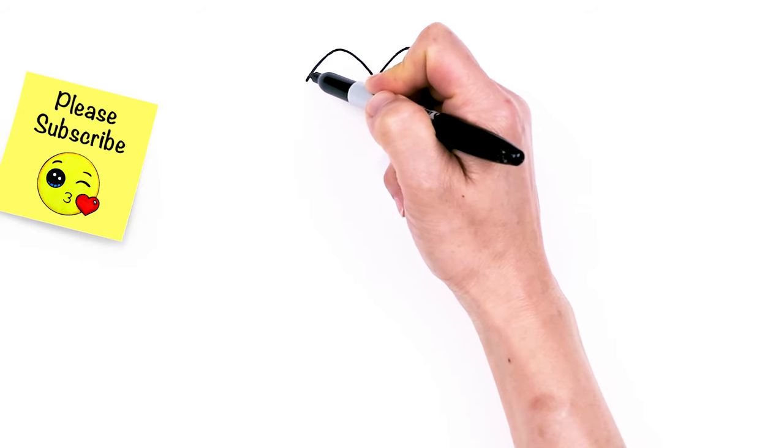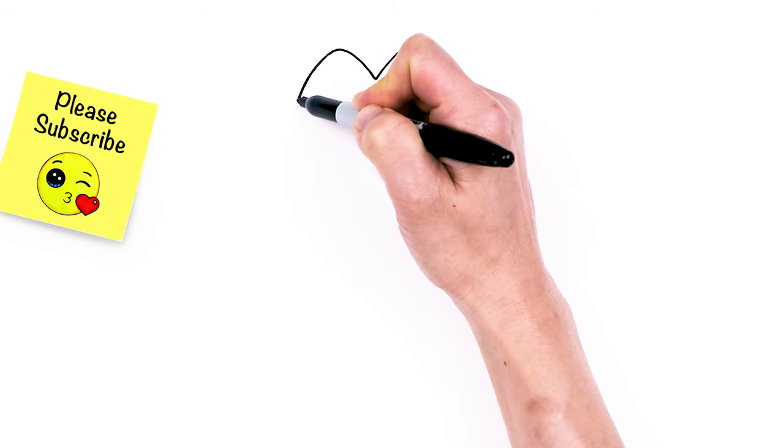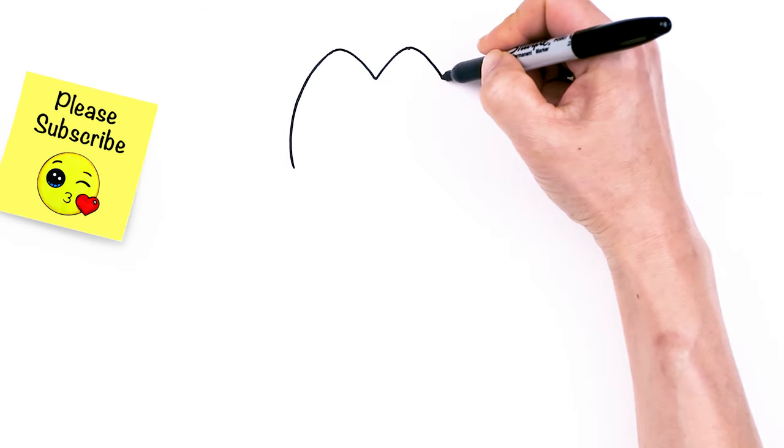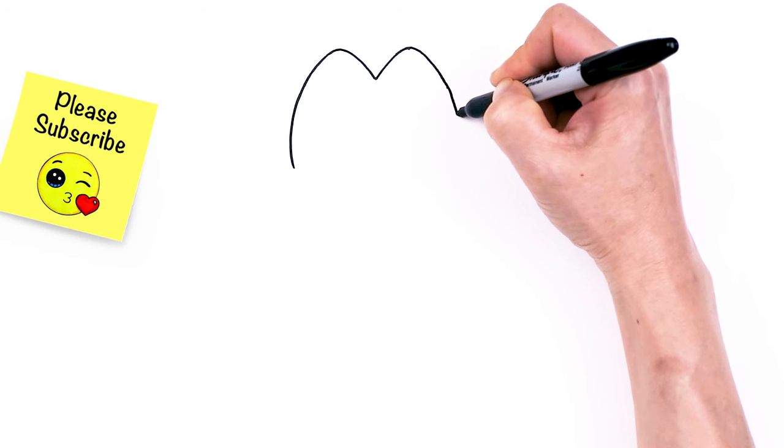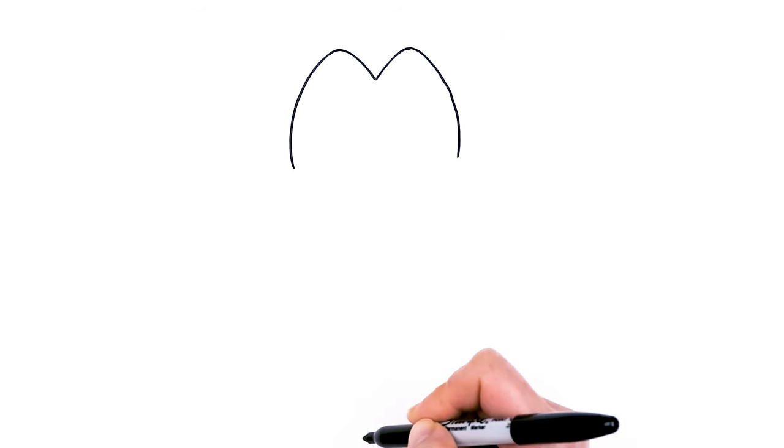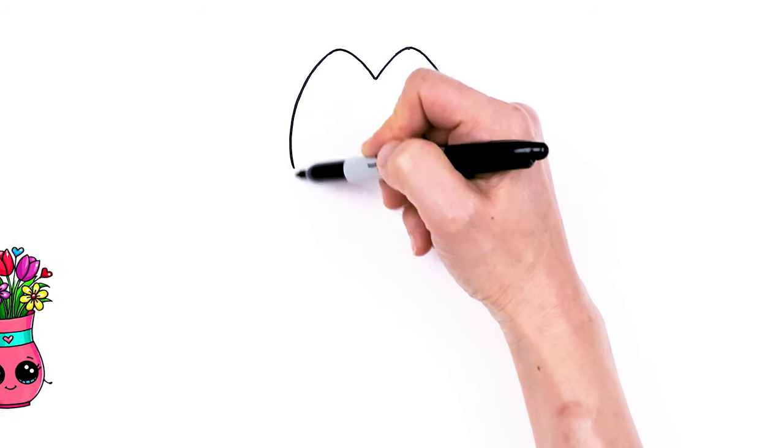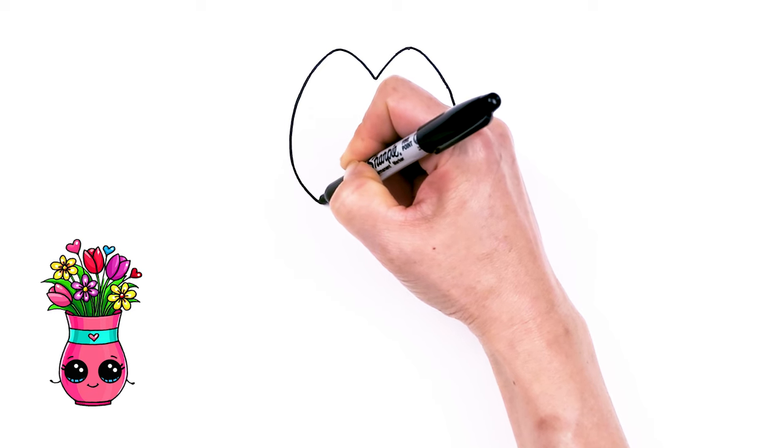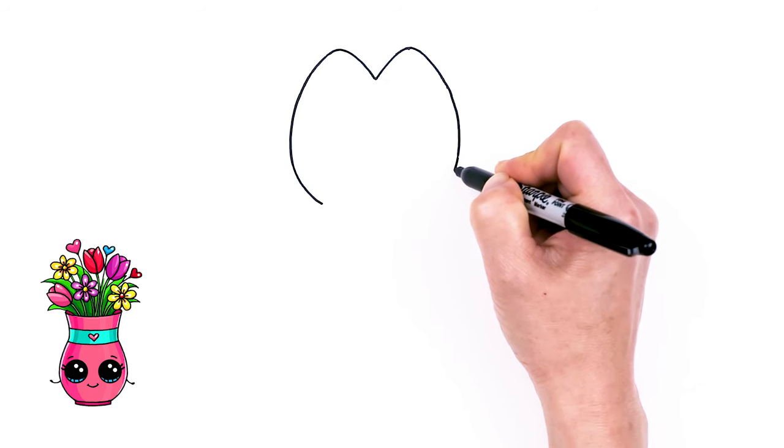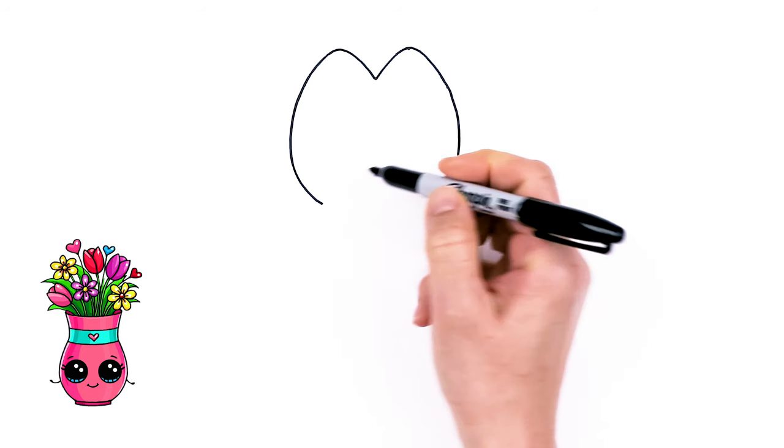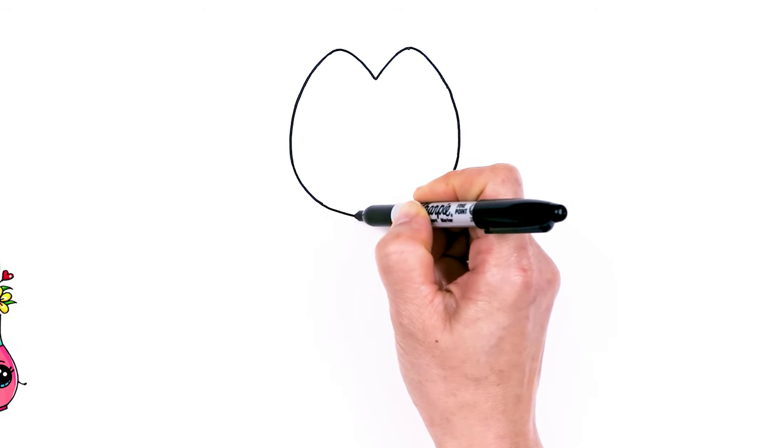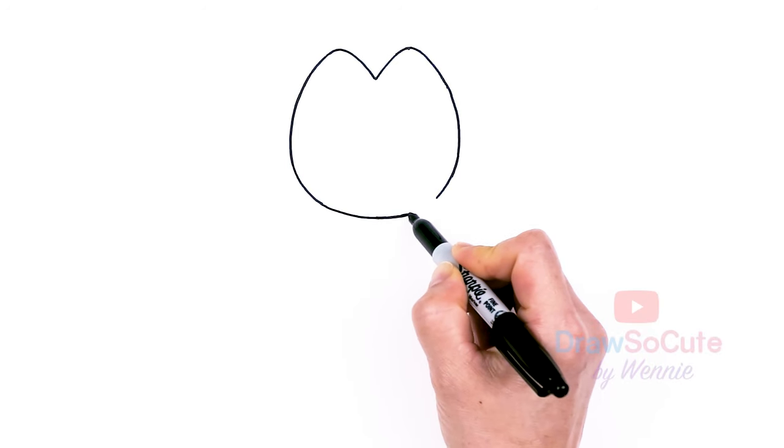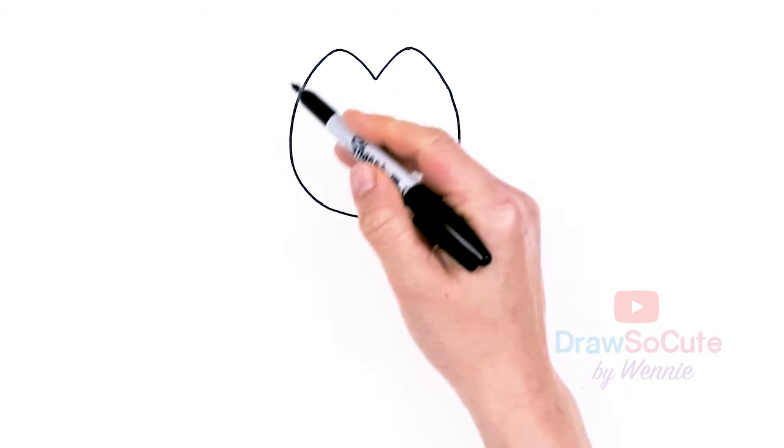Then from there we're just going to bring it down to draw the body of our tulip flower. So bring it down and bring it down on this side. So it doesn't come out very much. It's actually pretty straight down and then we're just going to draw a big curve for the bottom of our tulip. And connect it all on the bottom right here with a big curve. So nice and round.